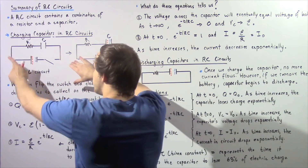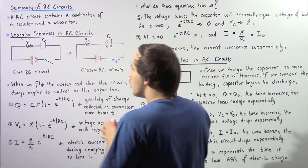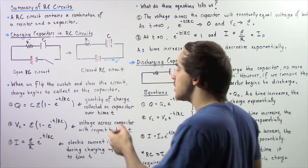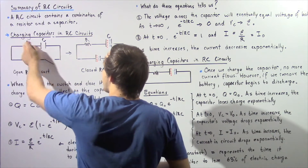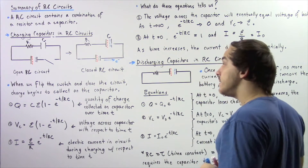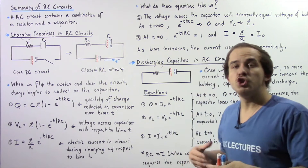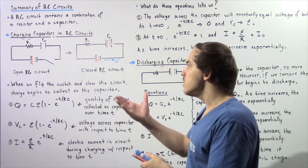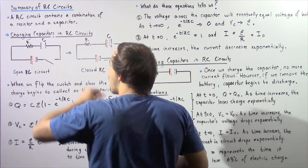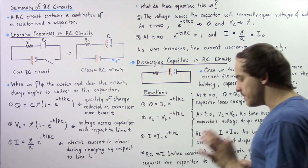Let's begin with the following open RC circuit. We have an open switch, a battery that creates a voltage difference, a resistor given by R, and a capacitor given by C. Because this is an open circuit, no electrons will flow through our circuit, and that implies that the charge on our capacitor will be neutral — the charge will be zero.